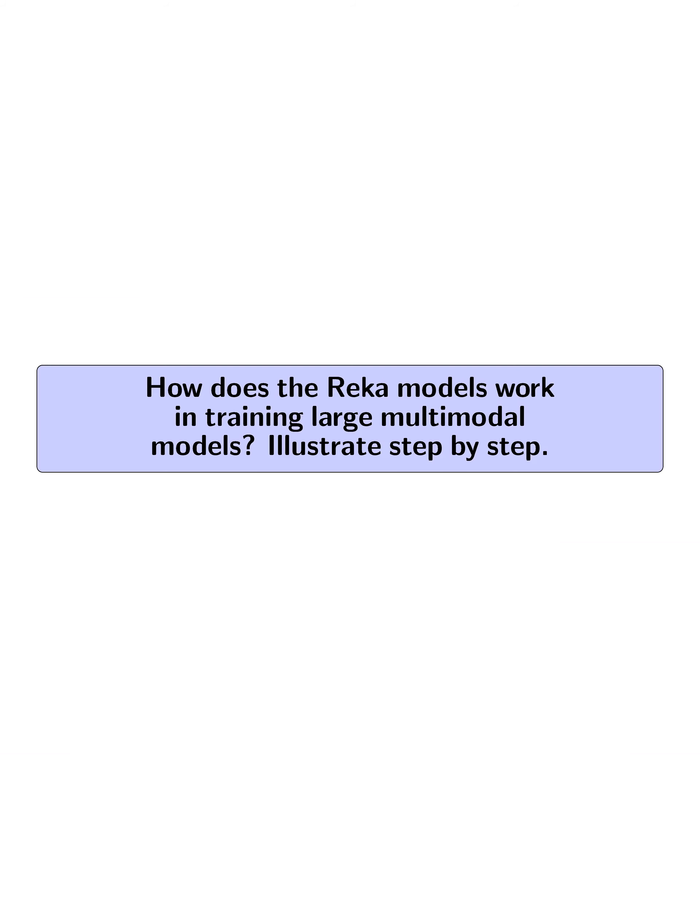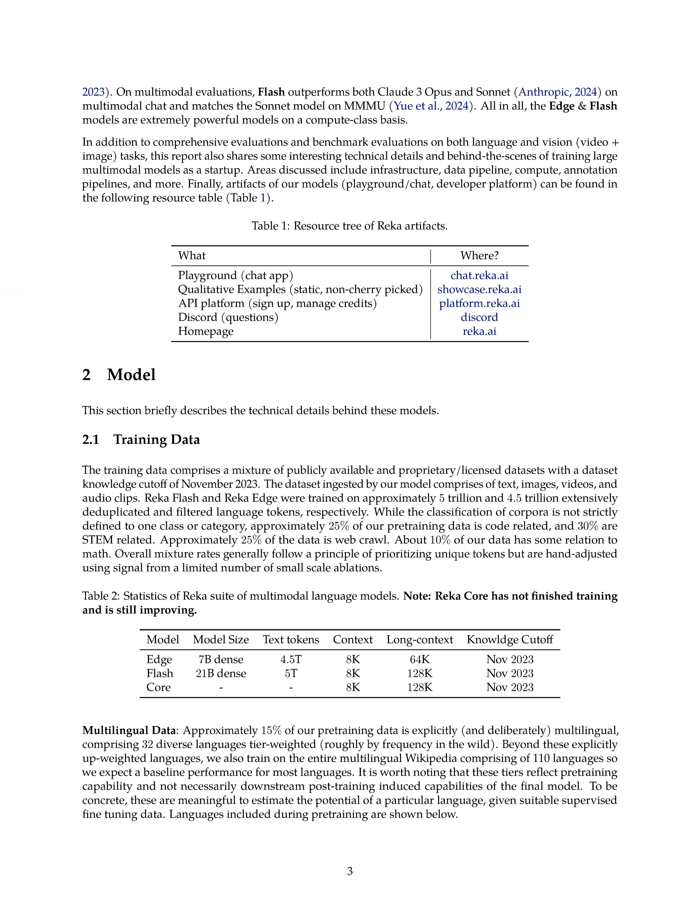How does the RECA models work in training large multimodal models? The RECA models work by first ingesting a mixture of publicly available and proprietary datasets, including text, images, videos, and audio clips. The training data for RECA Flash and RECA Edge consists of approximately 5 trillion and 4.5 trillion extensively deduplicated and filtered language tokens, respectively.